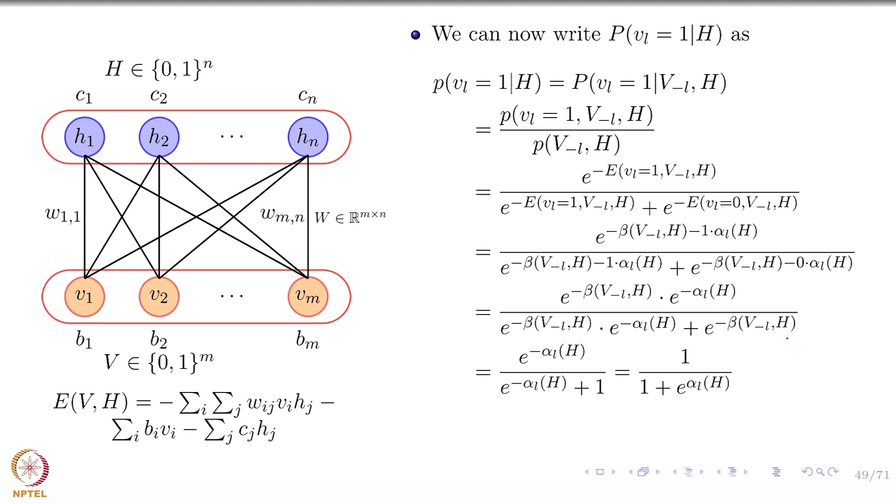Have you ever seen this formula ever in your life? Sigmoid of? And what was alpha_L(H)? Minus of this quantity, right? Is that fine? So the probability of the Lth unit being 1 is actually the sigmoid of a weighted sum of all the incoming connections. Does that statement make sense? How many get what I just said? The probability of the Lth unit being 1 is actually the sigmoid of the weighted sum of all the inputs connected to it. And what are the inputs connected to the visible unit? All the hidden units, right? So it is a weighted sum of that. So I can write it as this.